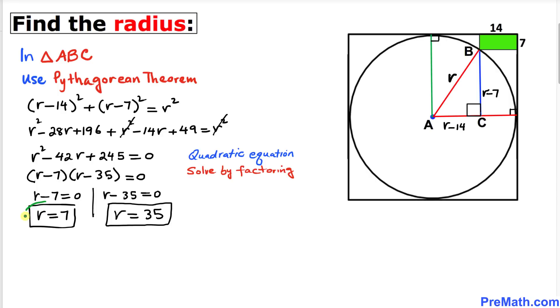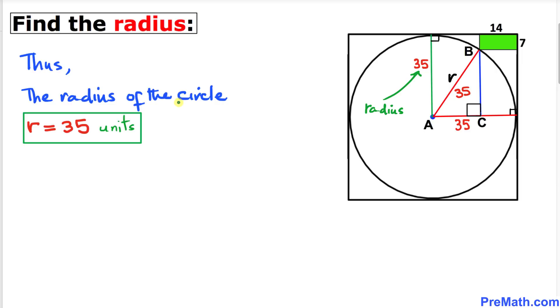We can see that r equals 7 looks really unrealistic since this side is 7 and this radius has got to be more than 7. Therefore we are going to reject this r equals 7 value and accept r equals 35. Thus the radius of this circle turns out to be 35 units.